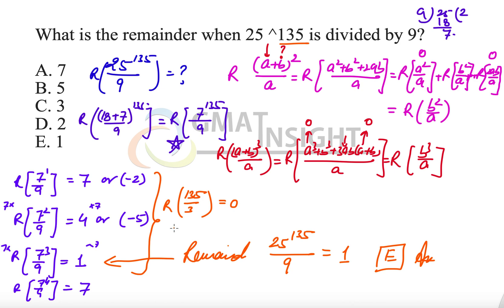If it were 136 instead, then 136 divided by 3 would leave a remainder of 1, meaning the first step of the cycle, which gives remainder 7. We keep finding the remainder using cyclicity, but first we need to translate the bigger numerator into a smaller one using the basic principle covered here.